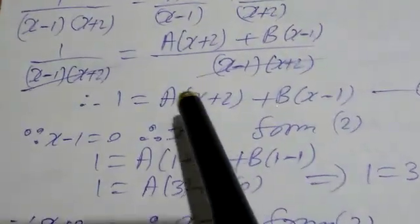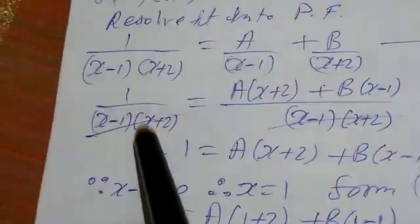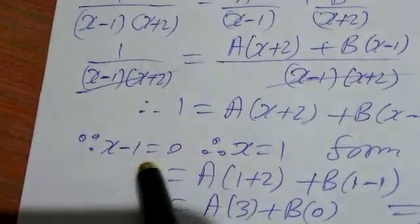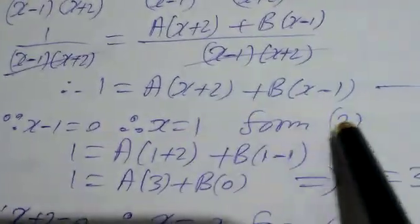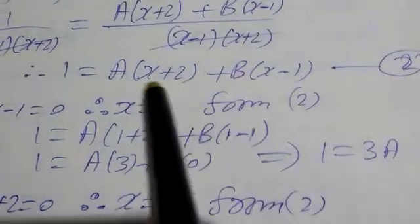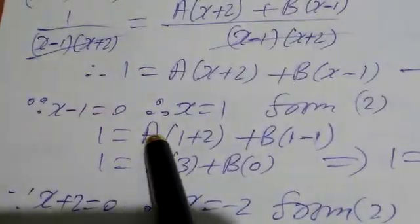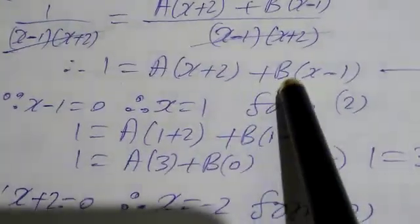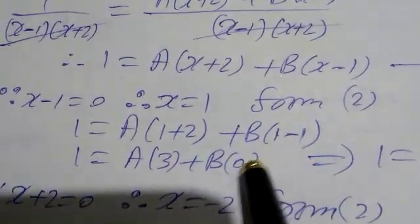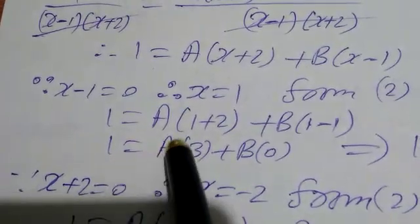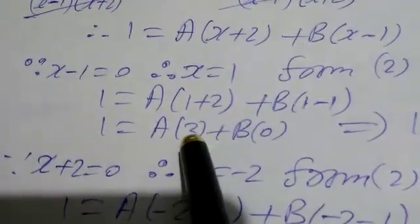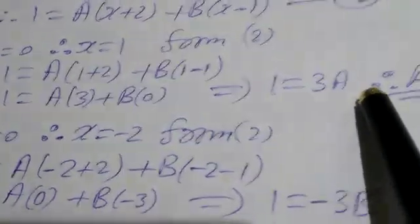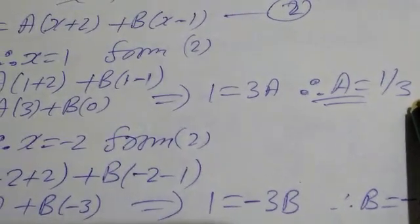One by one I will put values of x to get A and B. Since (x minus 1) is equal to 0, therefore x is equal to 1. From equation 2: 1 is equal to A into (1 plus 2) plus B into (1 minus 1). That becomes 1 is equal to A into 3 plus B into 0, so 1 equals 3A. Therefore A is 1 upon 3.